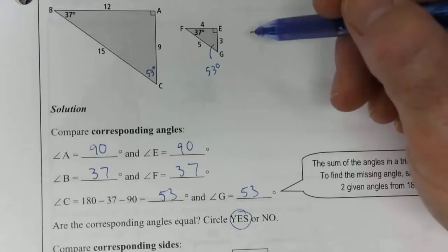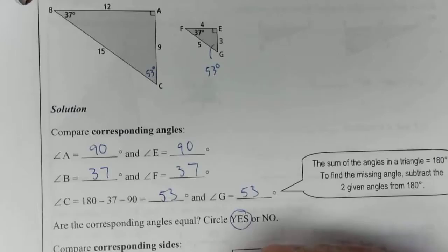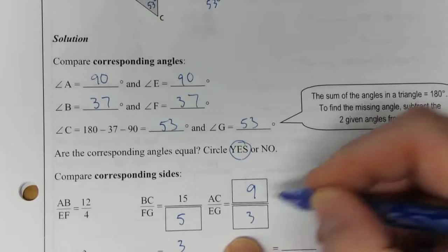So BC is the hypotenuse, and it's 15. FG is the other hypotenuse, and it's 5. So 15 divided by 5 is also 3. AC has a length of 9, and EG has a length of 3. Again, 9 divided by 3 is 3. So there's a scale factor of 3.